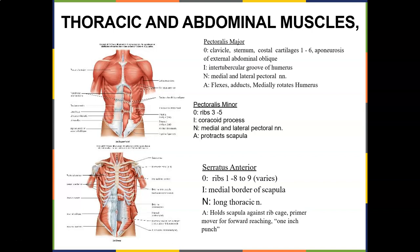Now we go into the anterior chest. We have the pec major and minor. Pec major originates on the clavicle, the sternum, costal cartilages 1 through 6, and the aponeurosis of the external abdominal obliques — so it has a little bit of attachment from there. It inserts into the intertubercular groove of the humerus. Nerve supply is the medial and lateral pectoral nerves. It flexes, adducts, and medially rotates the humerus — like you're giving someone a big bear hug.